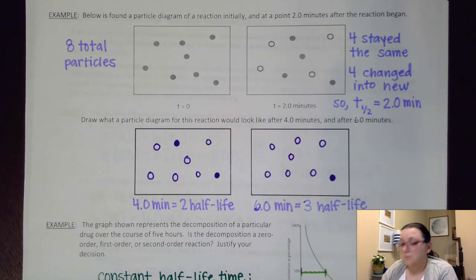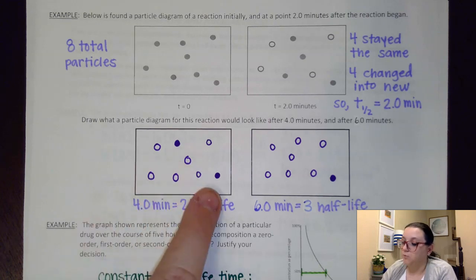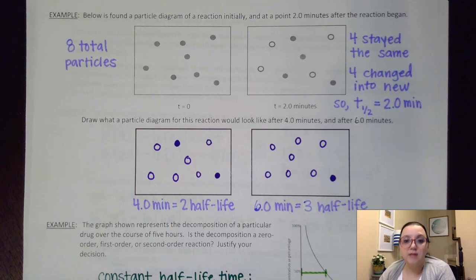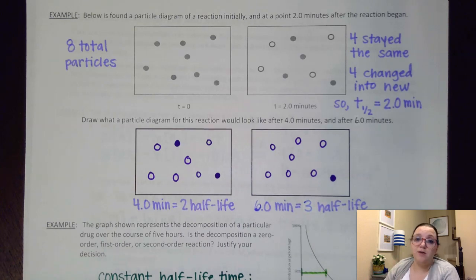So then another two minutes passes. Now I'm up to six minutes. So now another half-life is going to have passed. So what that means is that my reactant that's remaining, my two particles, that's going to get halved again. And so as it gets halved again, that would bump me down to only one of that original particle remaining. And the other seven particles would all be my new product. So you can see how that number just gets smaller and smaller and smaller as you progress on.